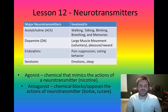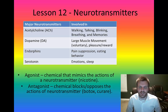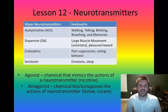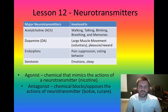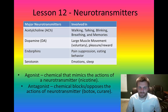A good example of an agonist is nicotine. It actually has the ability to mimic the effects of acetylcholine (ACH). This is why some people smoke in order to calm themselves down and focus, as one of the functions of acetylcholine deals with calming, tapping into memories, and so on.